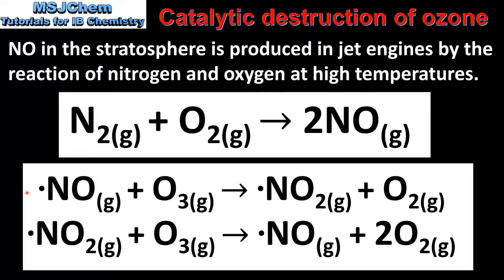Here we'll look at the mechanism involved. In the first step, nitrogen monoxide reacts with ozone to form nitrogen dioxide and oxygen gas. Note that nitrogen dioxide is also a free radical. In the second step, nitrogen dioxide reacts with ozone to form nitrogen monoxide and oxygen gas. The nitrogen monoxide is acting as a catalyst because it is regenerated in the second step and can then go on to react with more ozone molecules.